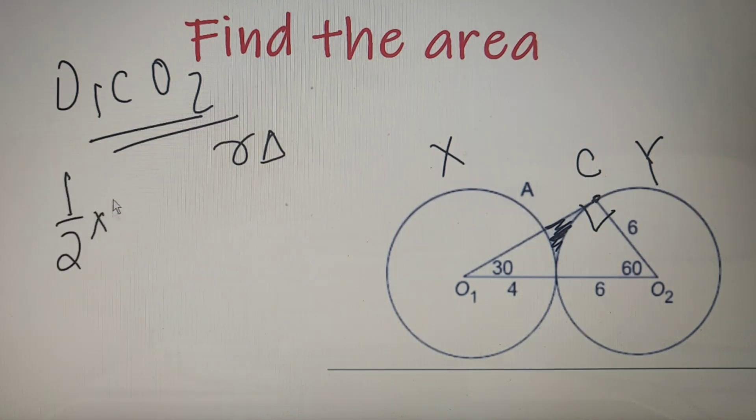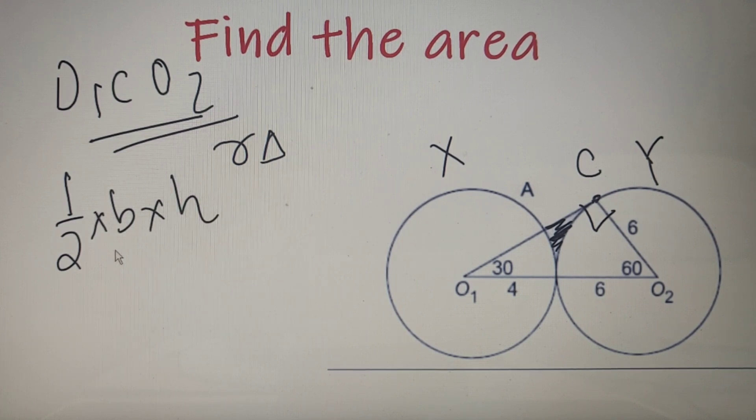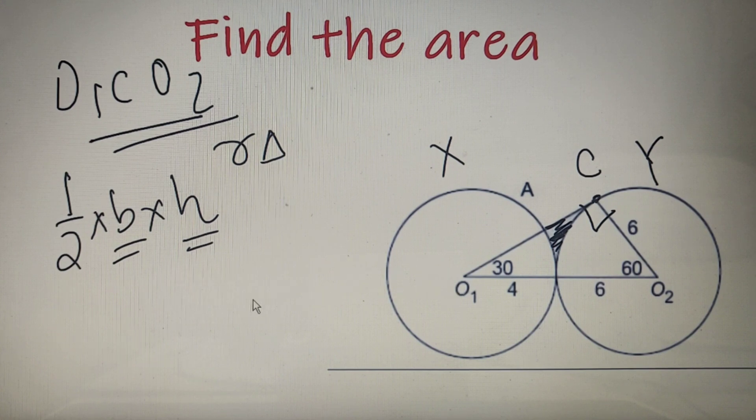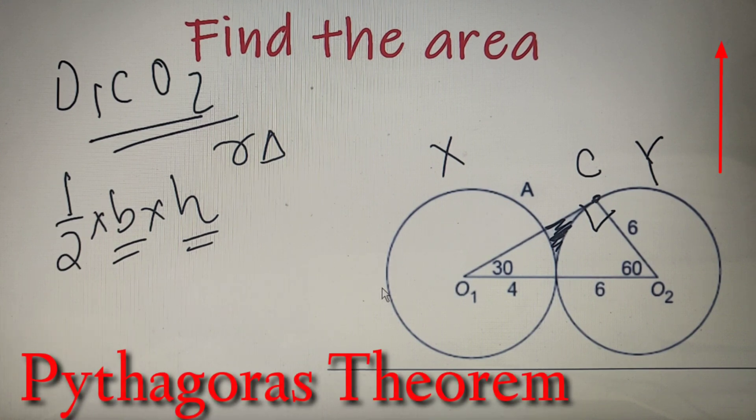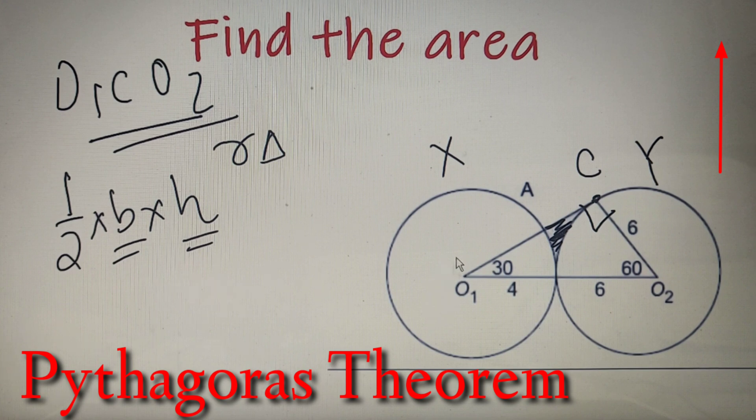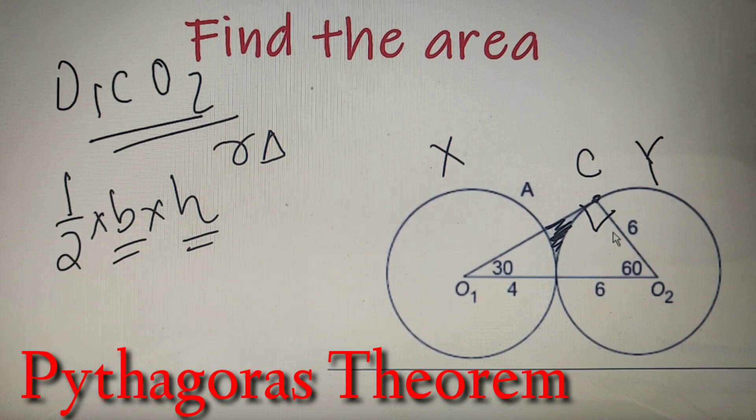The area of the triangle is equal to half into base into height. Now we know that CO2 is equal to the base of the triangle and that is equal to 6 units. And to find out the height of the triangle, we can apply the Pythagoras theorem. For those who don't know what Pythagoras theorem is, it's a theorem which says that in a right angle triangle, the sum of squares of perpendicular and base is equal to the square of the hypotenuse.